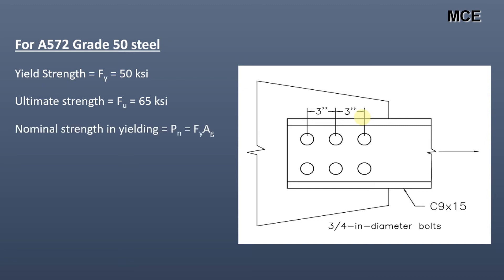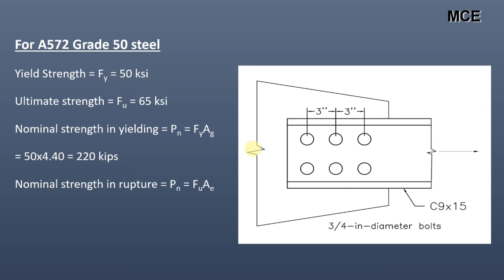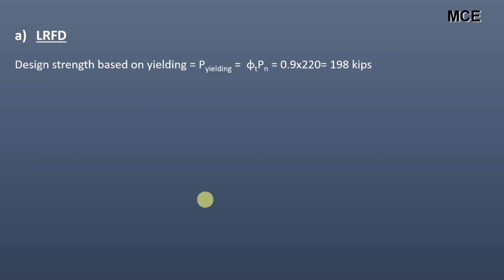The nominal strength in yielding is given as Fy multiplied by the gross area, which equals 50 multiplied by 4.40, giving 220 kips. The nominal strength in rupture equals Fu multiplied by the effective area, which equals 65 multiplied by 3.52, giving 228.8 kips.